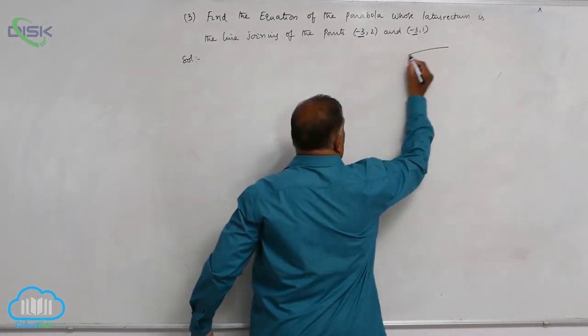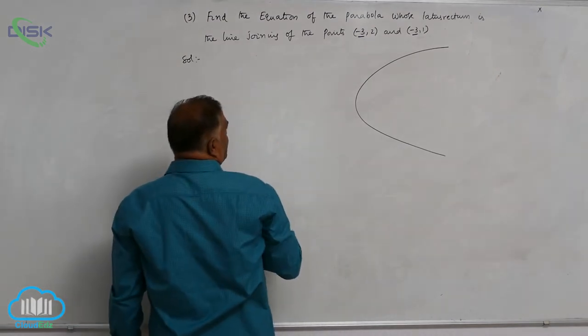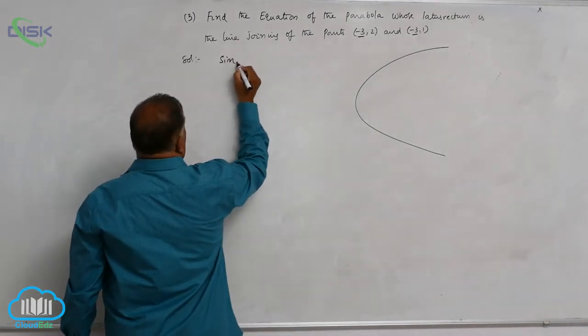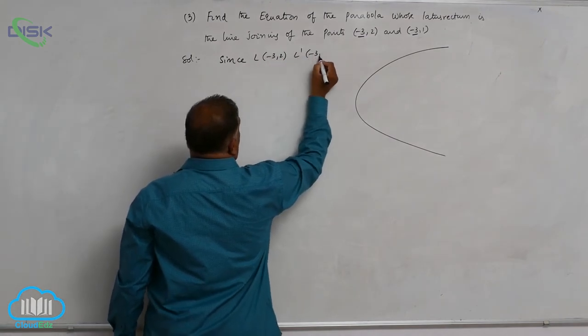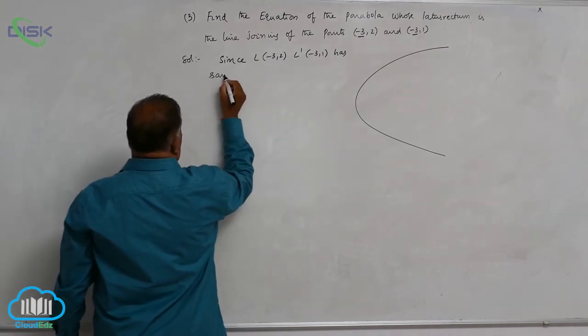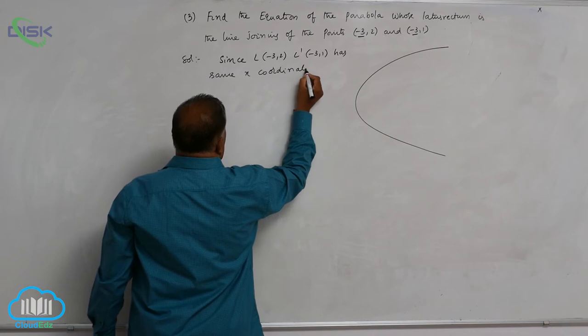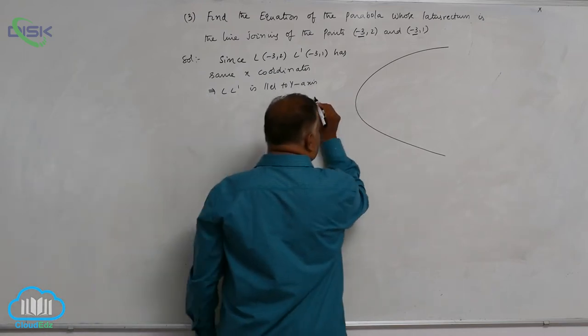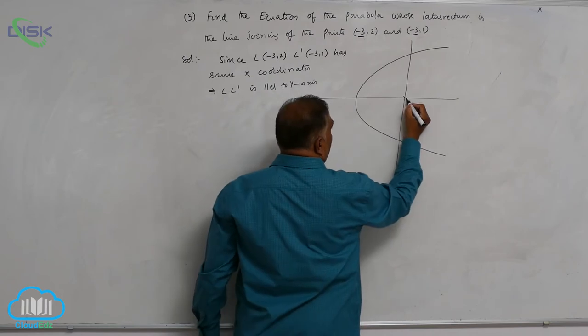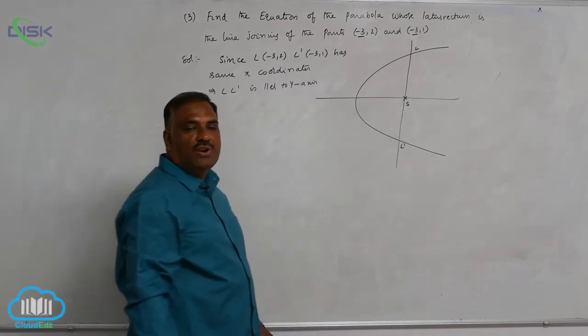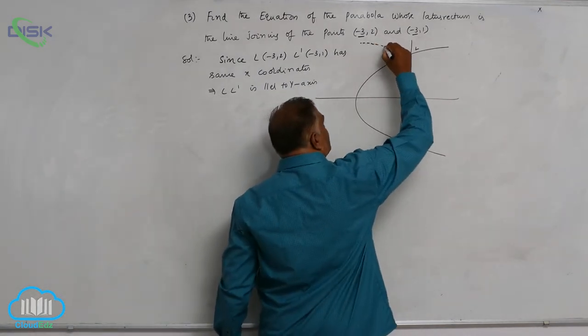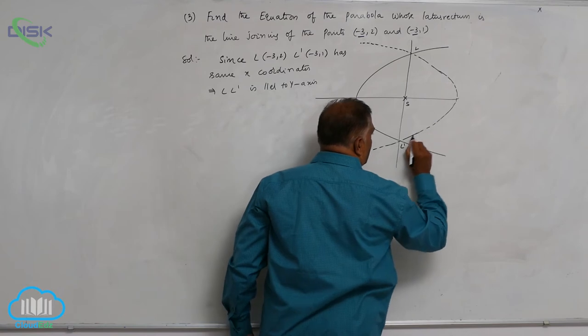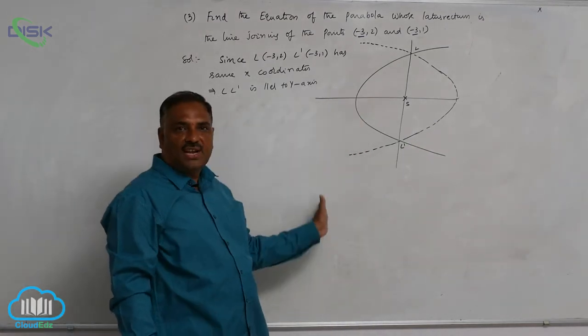Now you can see the parabola is like this because the x-coordinates of the latus rectum are identical. Since L(-3, 2) and L'(-3, 1) have the same x-coordinates, LL' is parallel to the y-axis. This means the parabola can be oriented with the latus rectum vertical. You can see one more parabola is also possible, that means the parabola can be either on the right-hand side or on the left-hand side.